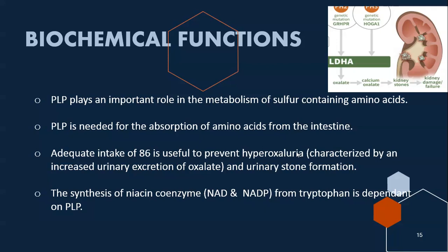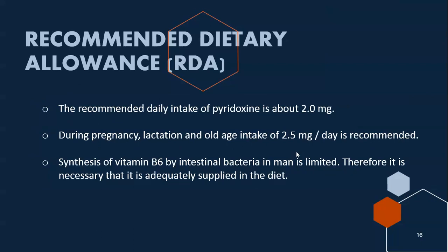Vitamin B6 also plays an important role in the metabolism of sulfur-containing amino acids, and PLP is needed for the absorption of amino acids from the intestine. Adequate intake of Vitamin B6 is useful to prevent hyperoxaluria, characterized by increased urinary excretion of oxalate and urinary stone formation. The synthesis of niacin coenzymes NAD and NADP from tryptophan is also dependent on PLP.